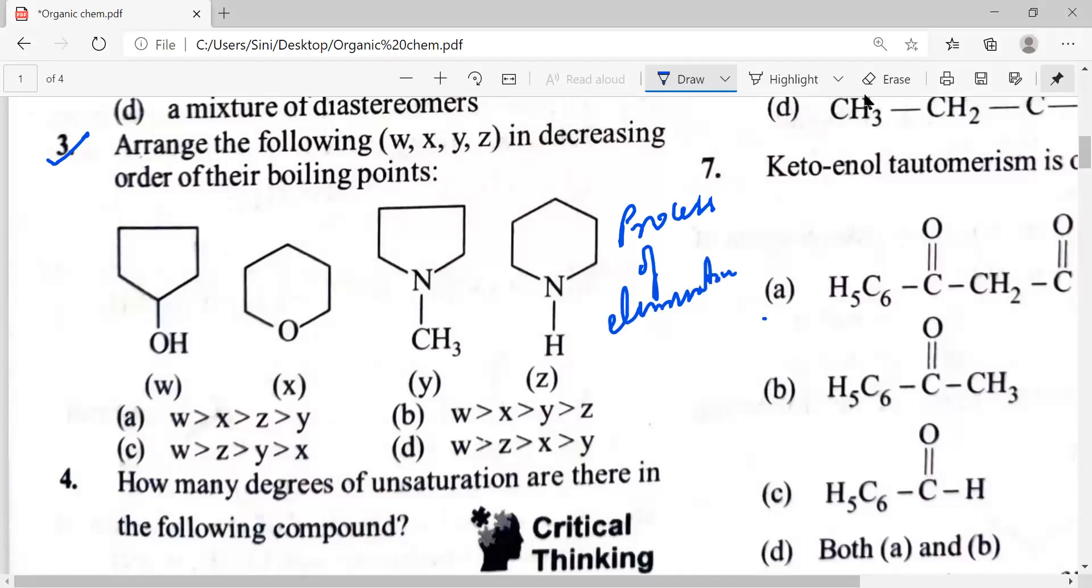Obviously we know that w, this OH is an alcohol group. So alcohol group always has a higher boiling point. So w is therefore in each and everything. But one important point in this question is we had to use the process of elimination.